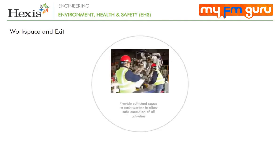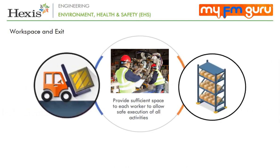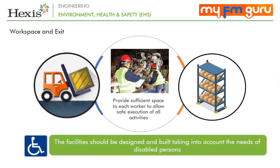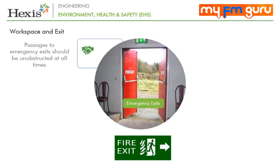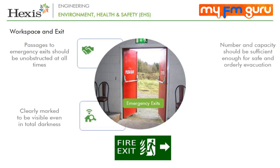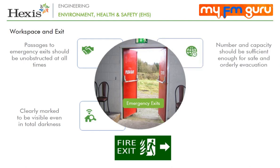The space provided for each worker should be adequate for safe execution of all activities, including transport and interim storage of materials and products. Facilities should be designed taking into account the needs of disabled persons. Passages to emergency exits should be unobstructed at all times. Exits should be clearly marked to be visible even in total darkness, and the number and capacity of emergency exits should be sufficient for safe and orderly evacuation. There should be a minimum of two exits from any work area.